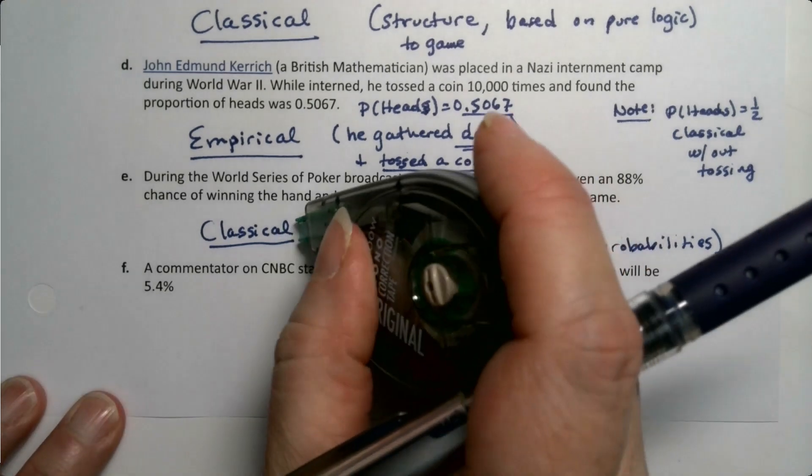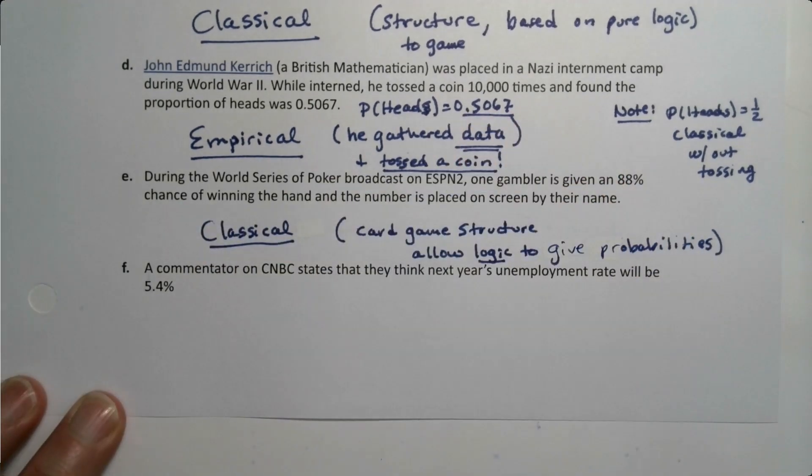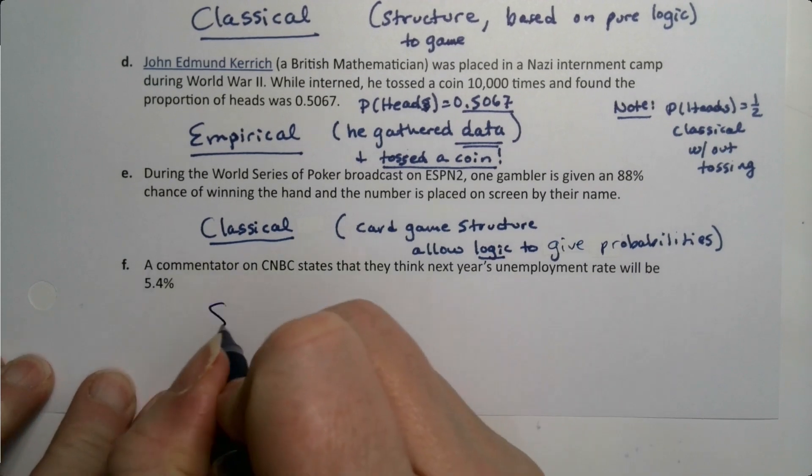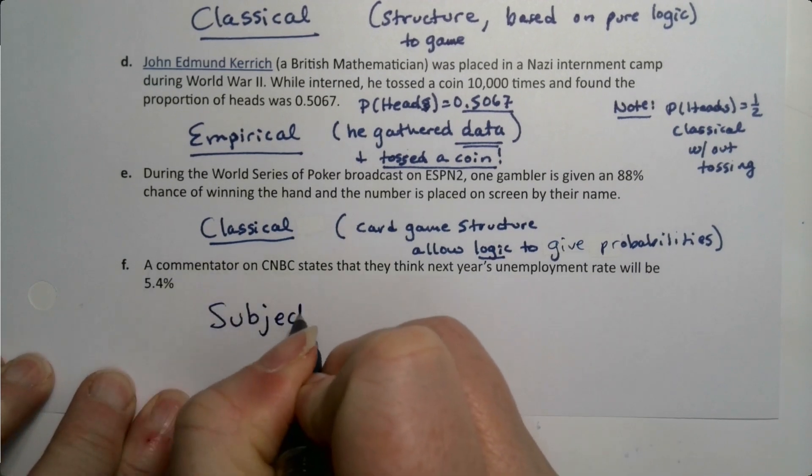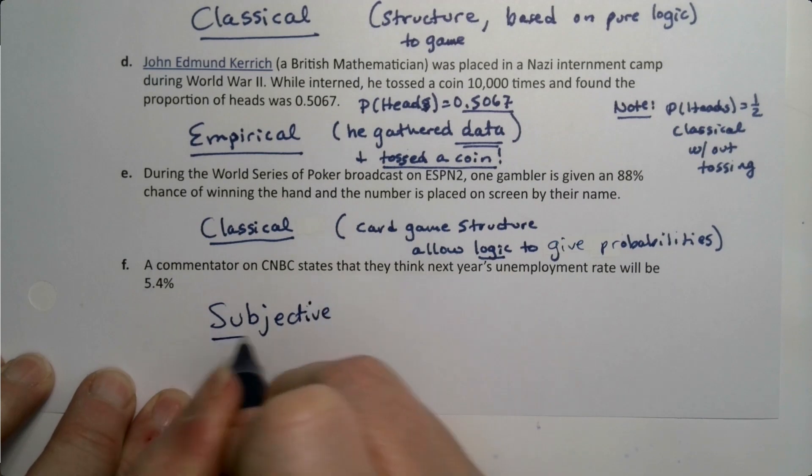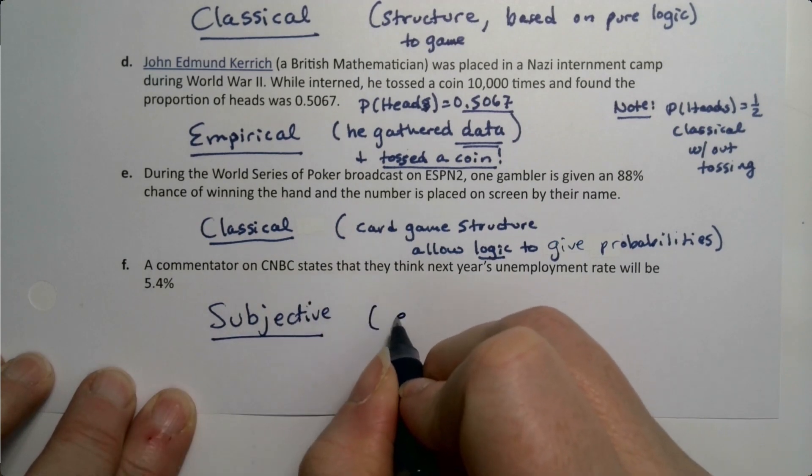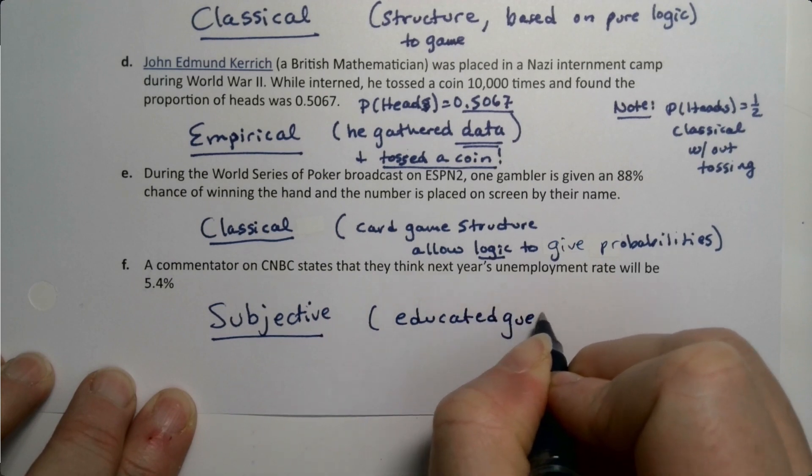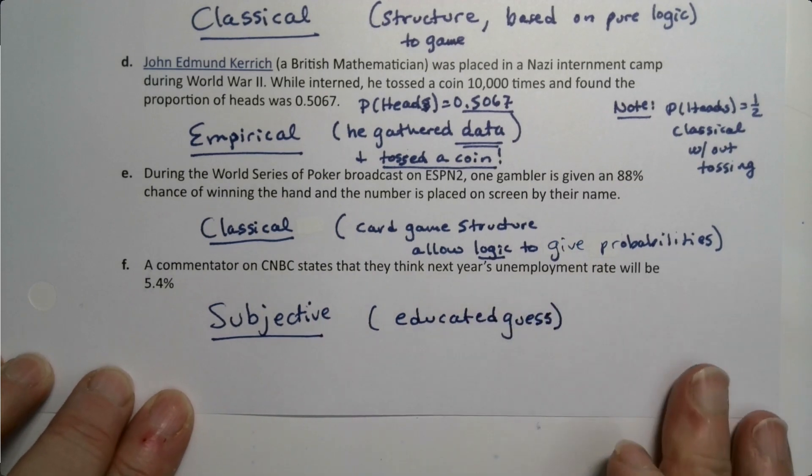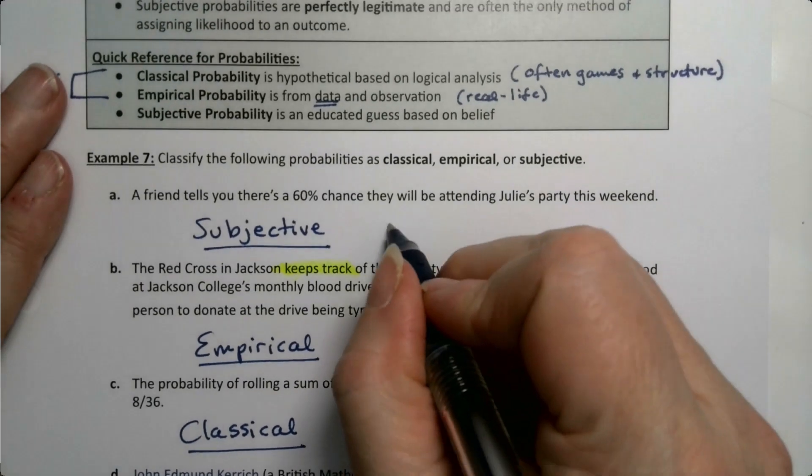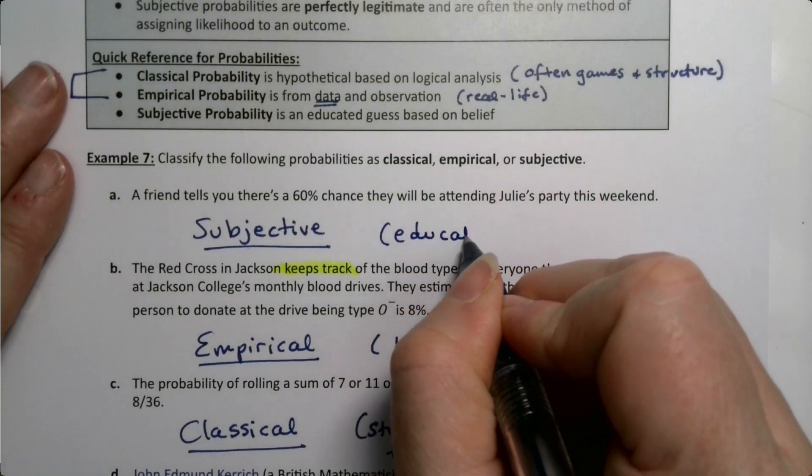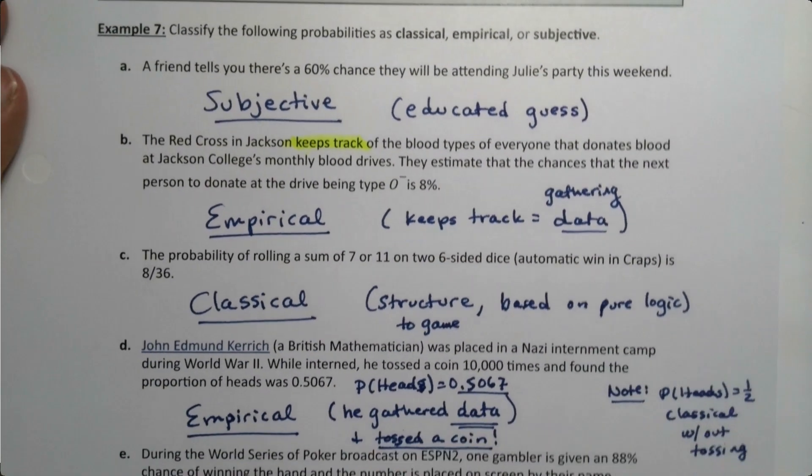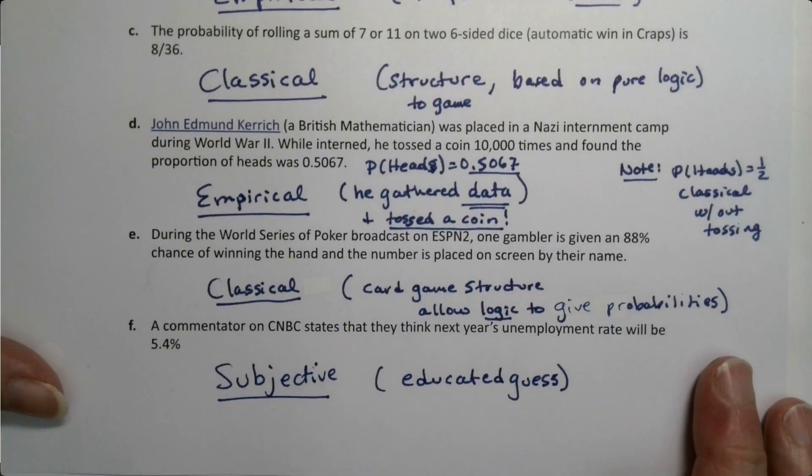Then a commentator on CNBC states that they think that next year's unemployment rate will be 5.4%. Oh, that is subjective. That is an educated guess. Future prognosticating by pundits. That is educated guess. Now I know it didn't particularly ask for why for these examples. But it's a good idea for your own benefit to write it down why. Because you'll want to know for your notes why you chose the particular ones that we did.